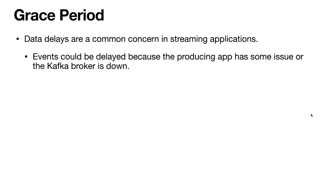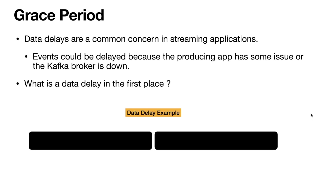Let me show you an example of what a data delay means. Here is a representation of two one-minute windows. The first window starts from 8 a.m. and ends at 8:01 a.m., and the second window starts from 8:01 a.m. to 8:02 a.m. We have a few events: one at 8:00:44, another at 8:00:54 in the first window, and one at 8:01:05 in the second window.